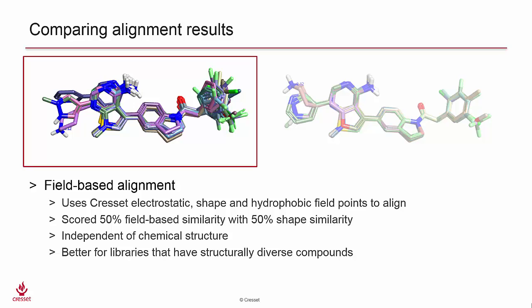First, there is our standard field-based alignment, in which we use a combination of electrostatics, shape, and hydrophobic field points to align molecules, and calculate a score using a combination of these feature alignments. This approach is independent of chemical structure and works well for libraries where there is a large degree of structural diversity.